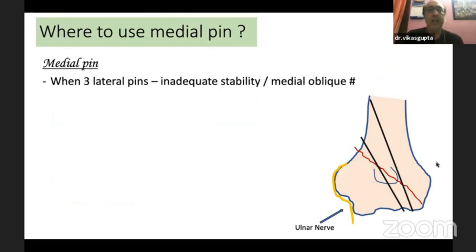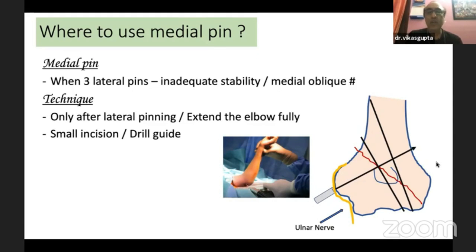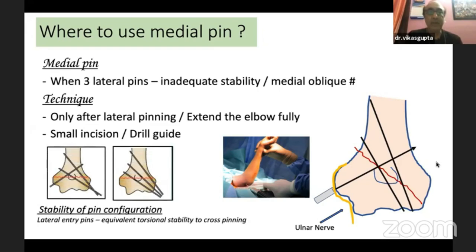A key question is where to use the medial pin. For fractures like a medial oblique fracture where lateral pins are not adequate and do not provide adequate stability, or when it is difficult to pass the third pin, you can pass a medial pin — but only after lateral pinning, extending the elbow so the nerve goes posteriorly. I prefer to use a small mini-open incision and a drill guide to protect the ulnar nerve. Stability-wise, lateral entry pins are equivalent to cross pins in terms of torsional stability.